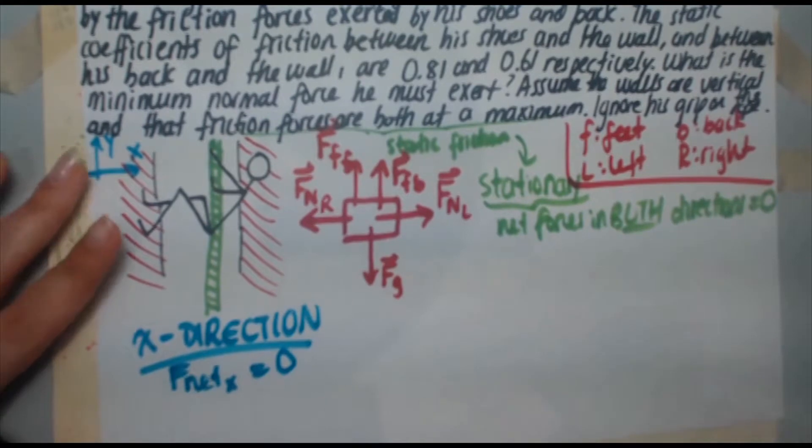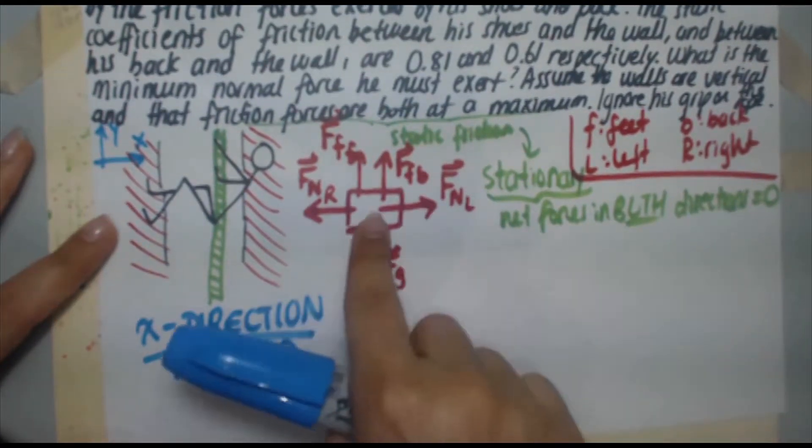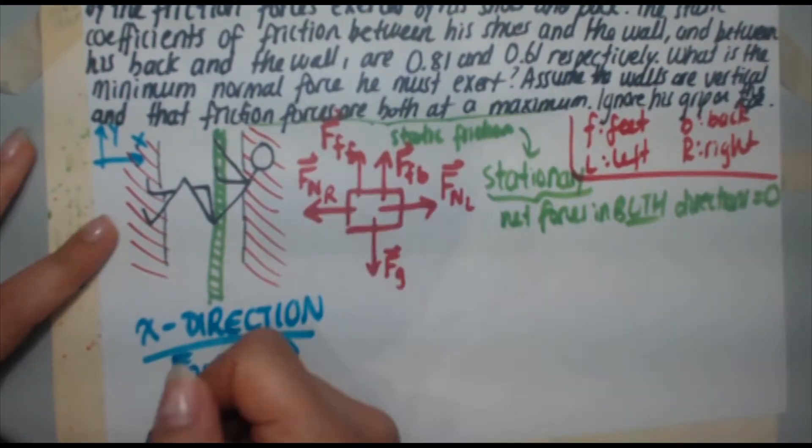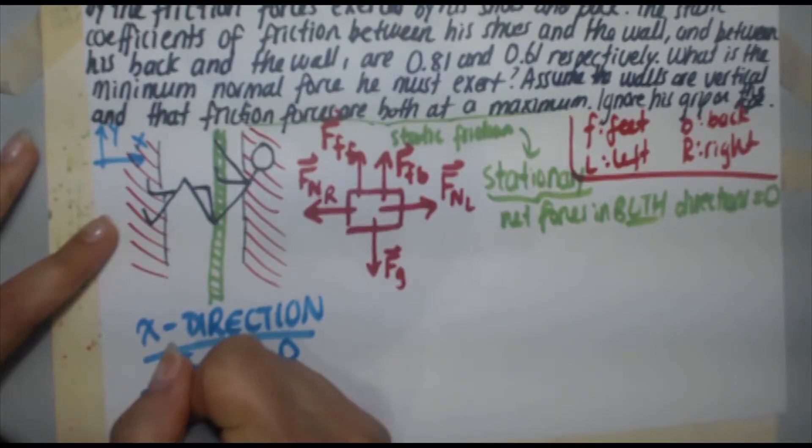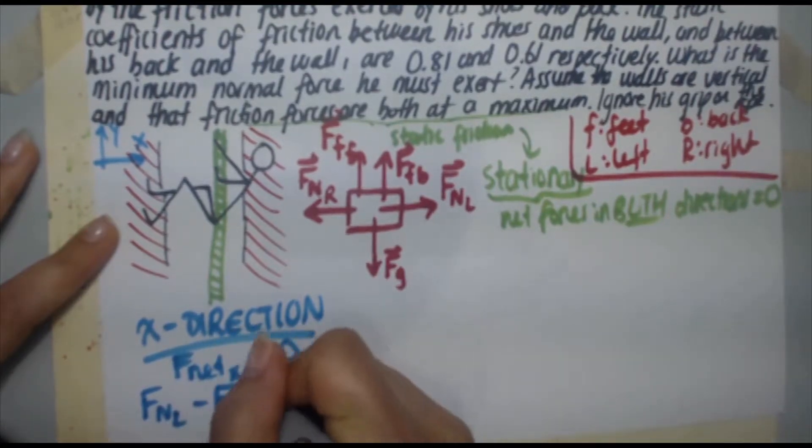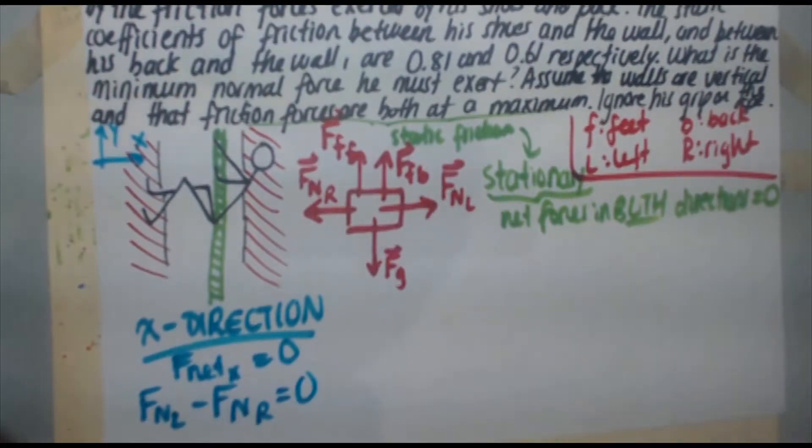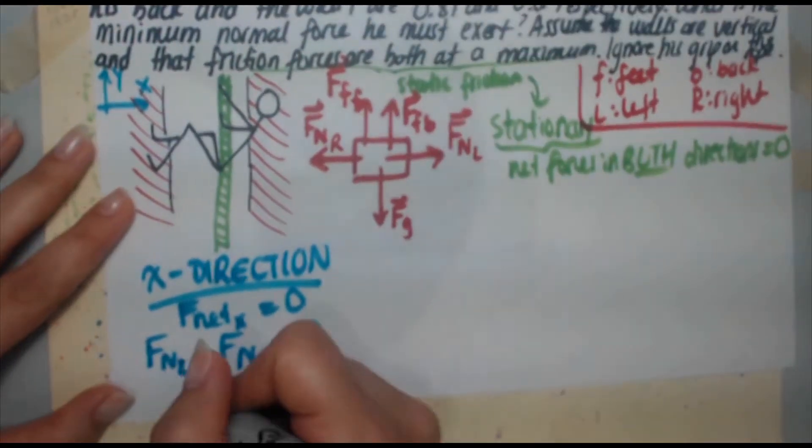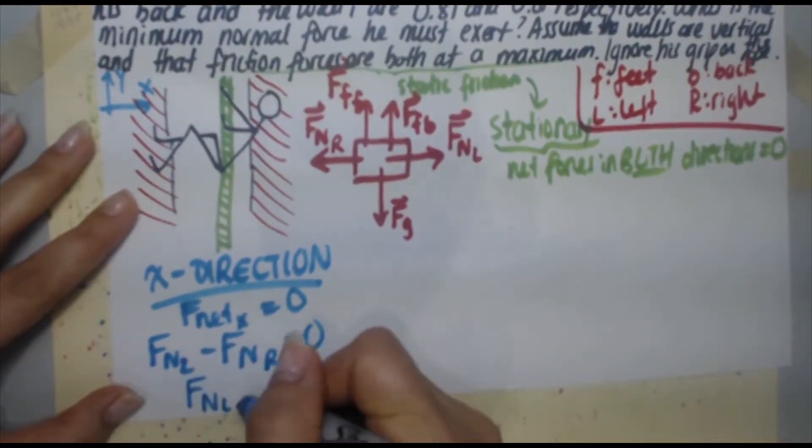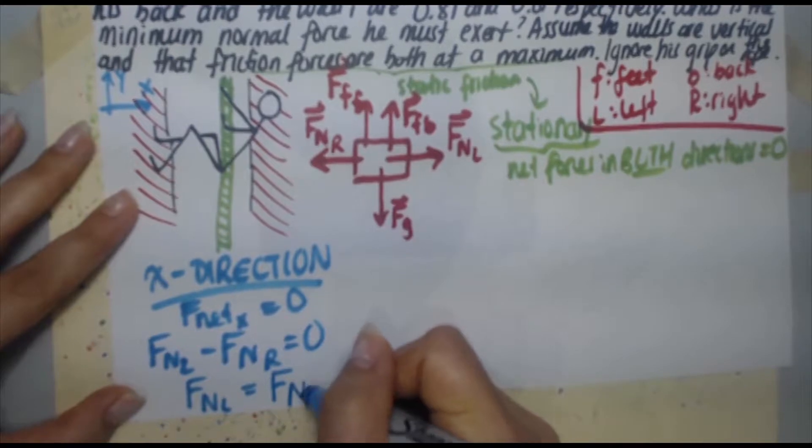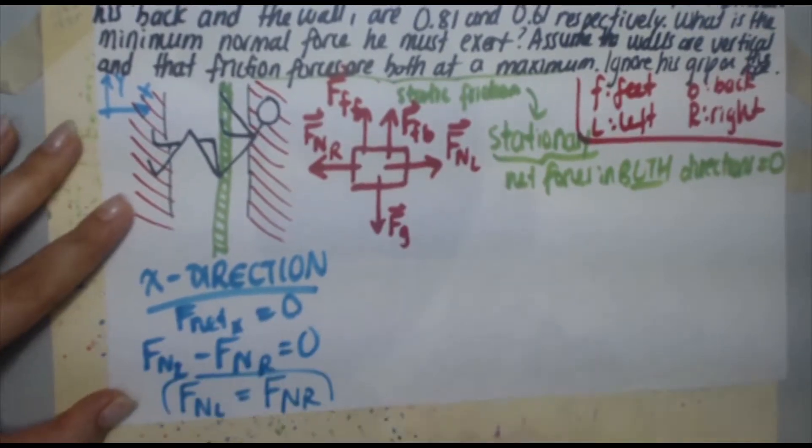We're going to do F net x equals zero. That's the best. So on the right, FNL minus left FNR. FNL minus FNR equals zero. So you come up with that simple expression. Therefore, FNL equals FNR.